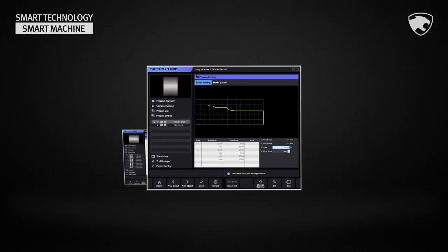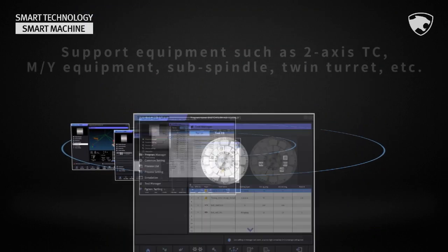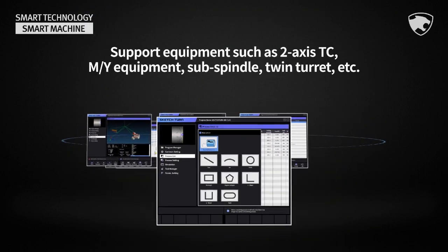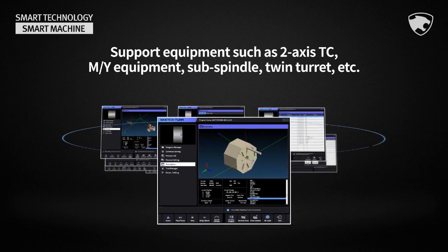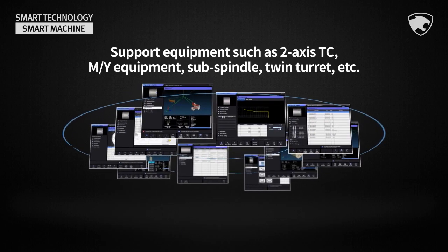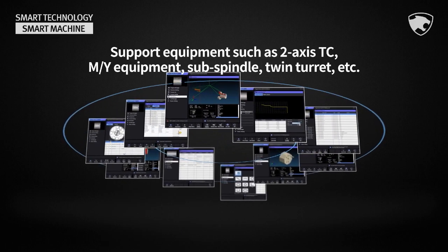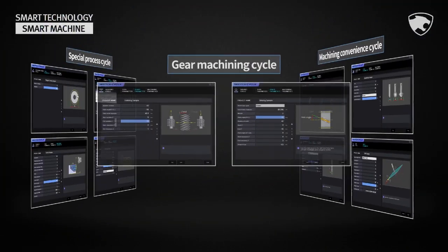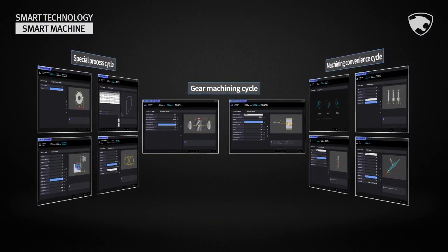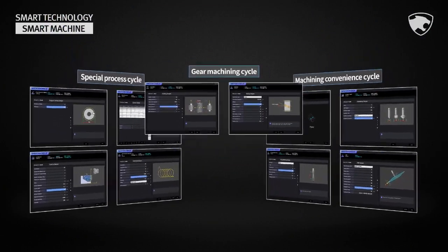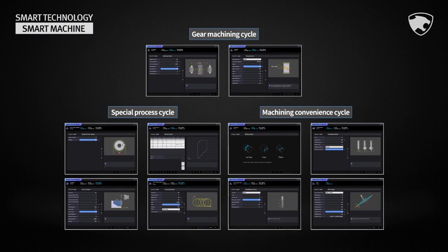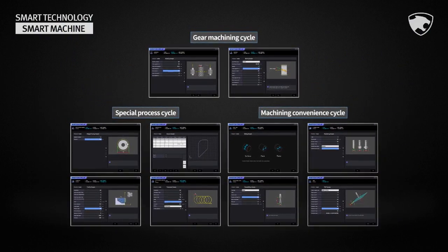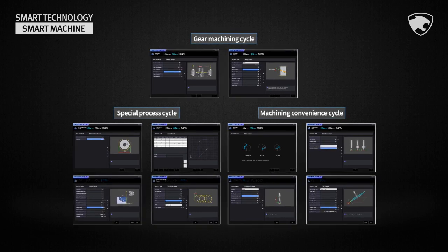Sketch Turn is an interactive programming software dedicated to turning centers, supporting not only 2-axis turning centers but also various types of equipment. Sketch Cycle is an interactive programming software for special processes that helps you easily conduct special types of machining such as gear machining and turn cut.